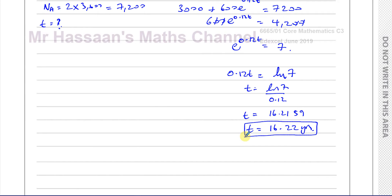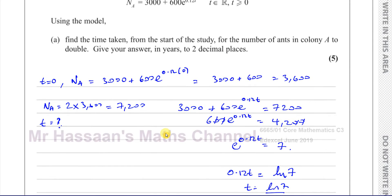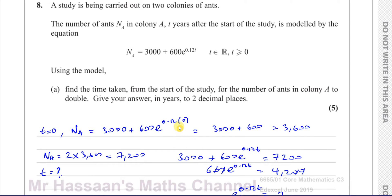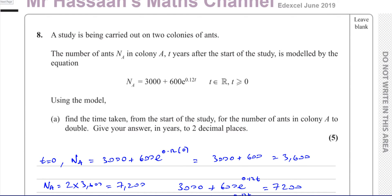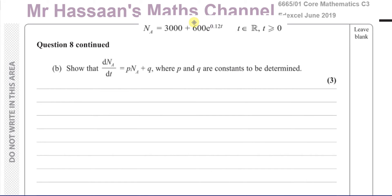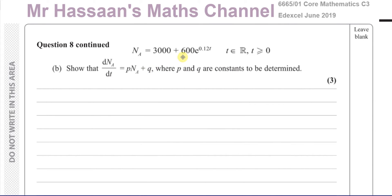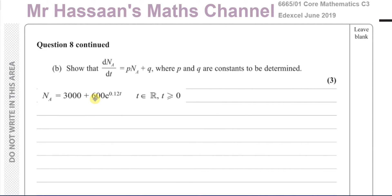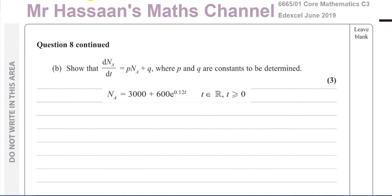Now on to part B. This is the part of the question that the person requesting this answer was actually after. It says show that dNA/dt equals p times NA plus q, where p and q are constants to be determined. So this is what NA is, as we know from the beginning of the question. They've told us when we differentiate this, we're going to get that. So let's differentiate.